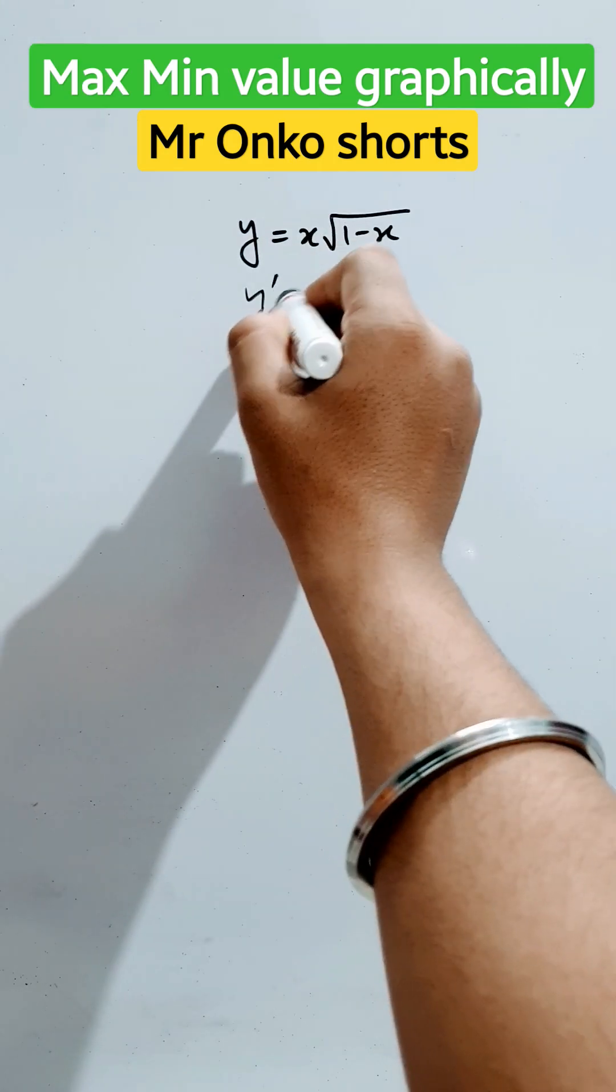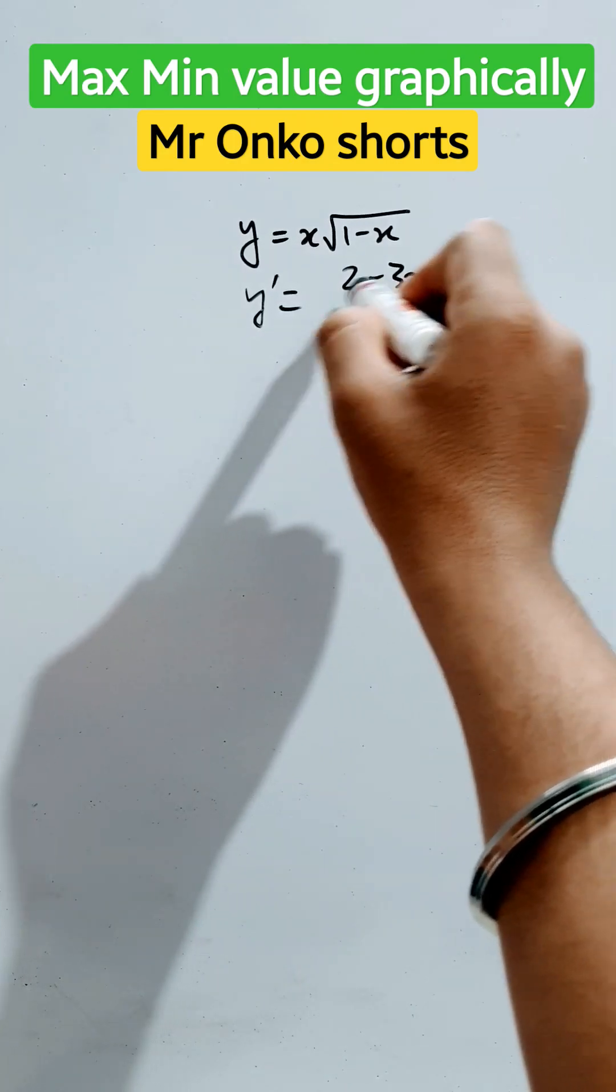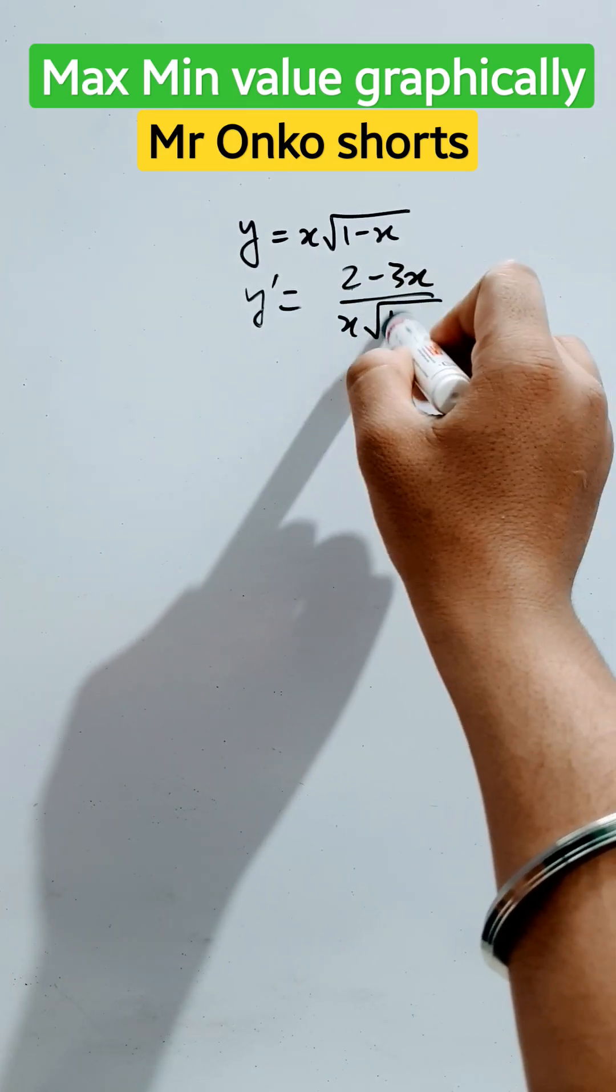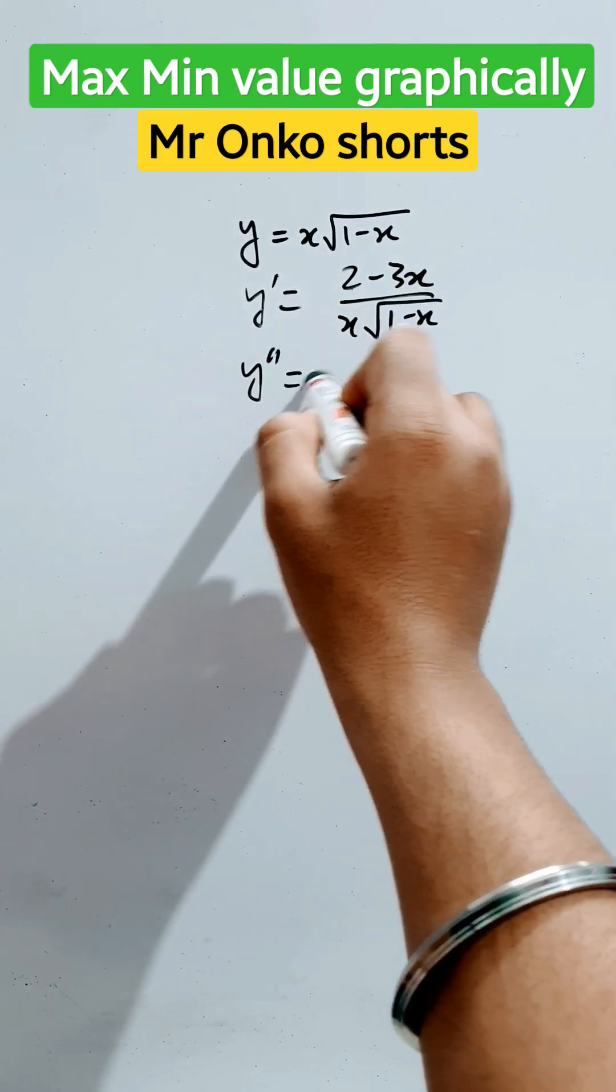So, first find the first derivative of this. It will be 2 minus 3x divided by x into root over of 1 minus x.